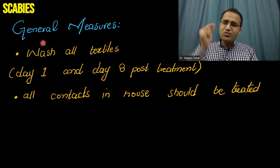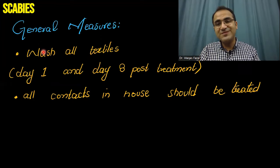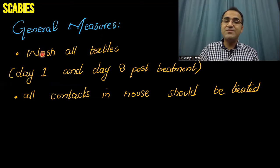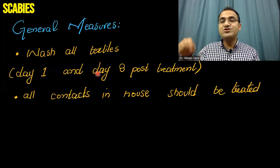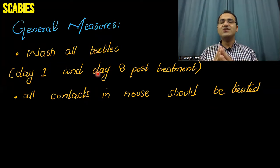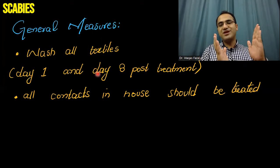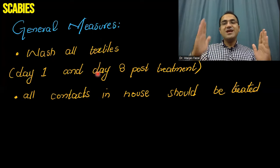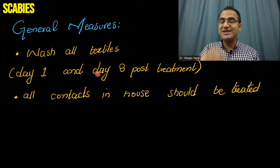Crucially, all textiles the patient is using — towels, bed sheets, clothing — must be washed on day one (the day of first treatment) and again on day eight. The patient applies the lotion, rinses it off after 8 to 12 hours, washes all clothes, and in severe cases also takes oral ivermectin. The entire regimen is repeated after seven days.